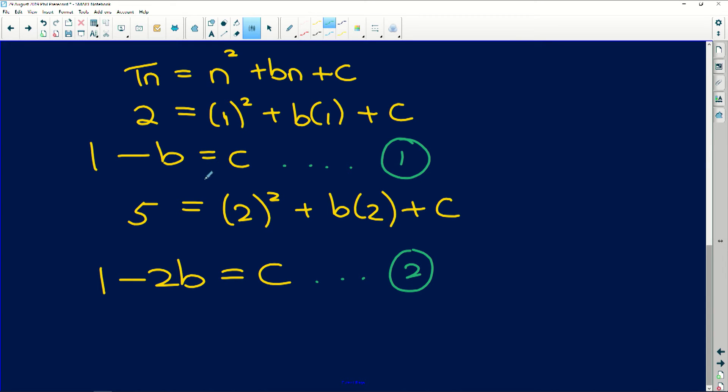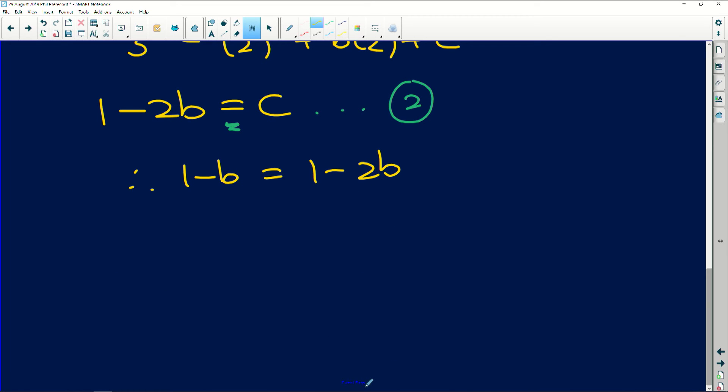Now because we have two things equal to c, we can equate their left-hand sides. So we're going to get 1 - b = 1 - 2b. If we subtract 1 from this side, we get 0 and we add b to that side, we get negative b, which means that b is simply 0. There is no b term.